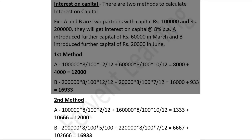That is one lakh into eight by hundred into two by twelve — we are using two months because in March he introduced sixty thousand more. In the next calculation, the total capital will become one lakh sixty thousand, so one lakh sixty thousand into eight by hundred into ten by twelve, because from March to December it is ten months. From the first calculation we get one thousand three hundred thirty-three, and from the next calculation ten thousand six hundred sixty-six. Total interest on capital is twelve thousand — same as the first method.